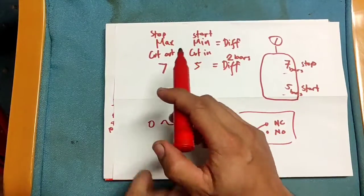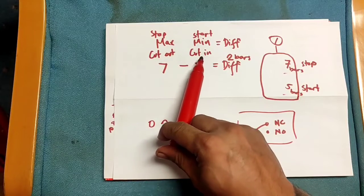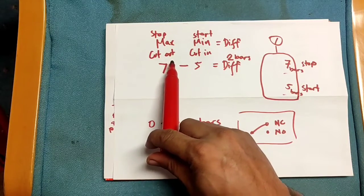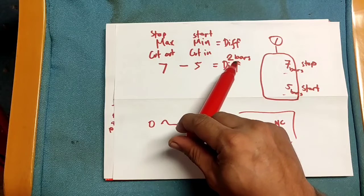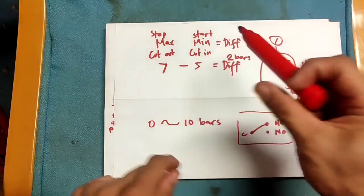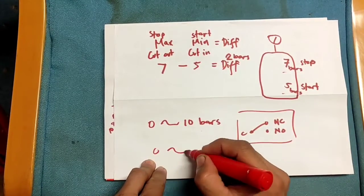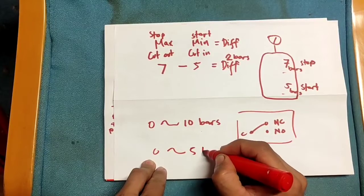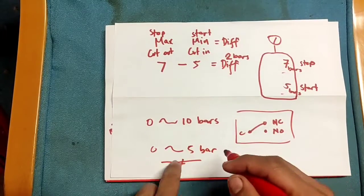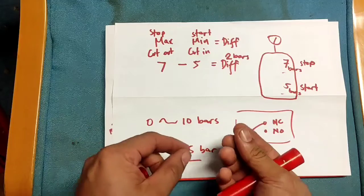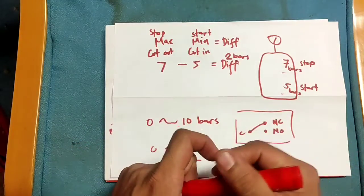The formula is: cut out minus cut in equals the differential. For example, 7 minus 5 equals 2 — so 2 is the differential. The differential set point ranges from 0 to 5 bars on this switch.